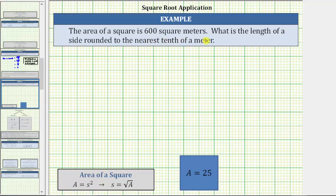The area of a square is 600 square meters. What is the length of a side rounded to the nearest tenth of a meter?